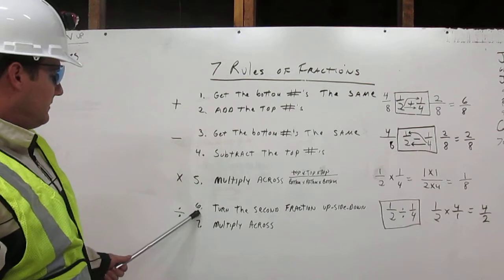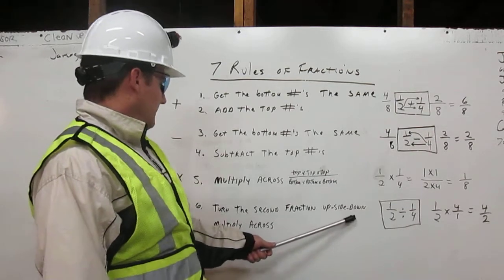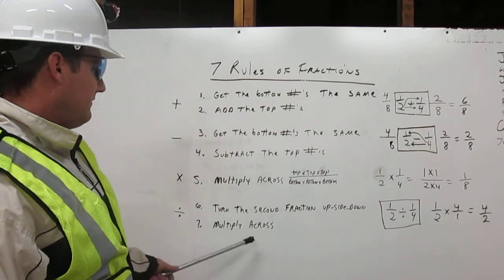Now, we are going to divide fractions. Number six. The first thing you do is turn the second fraction upside down. Number seven. Multiply across.